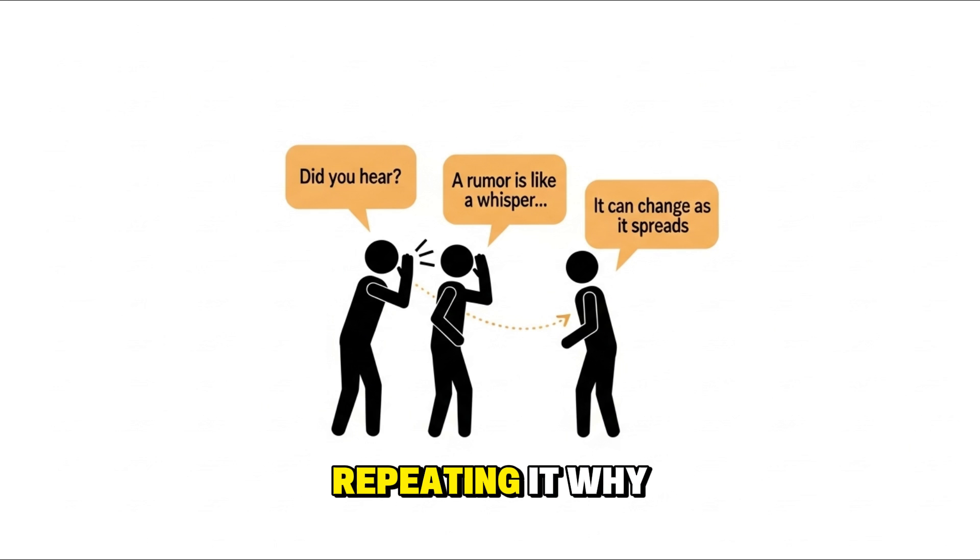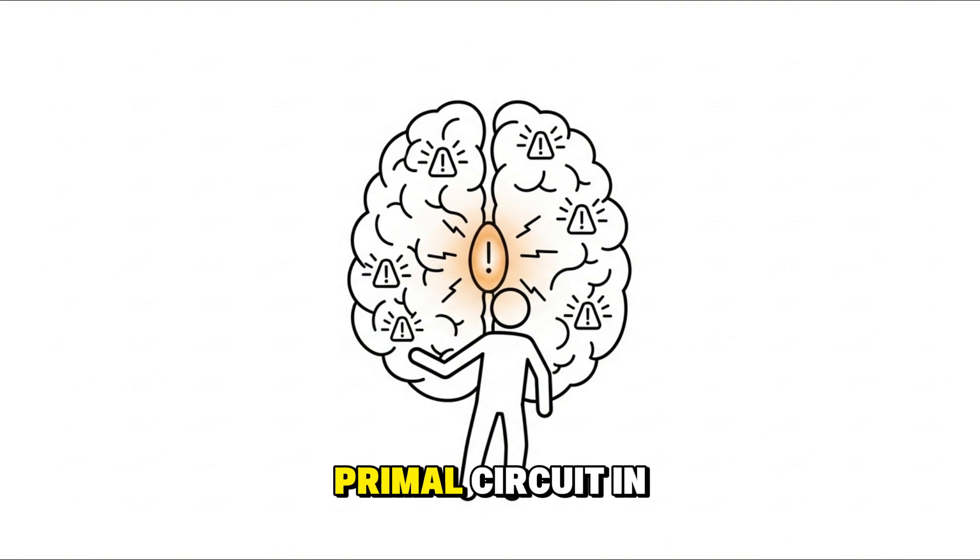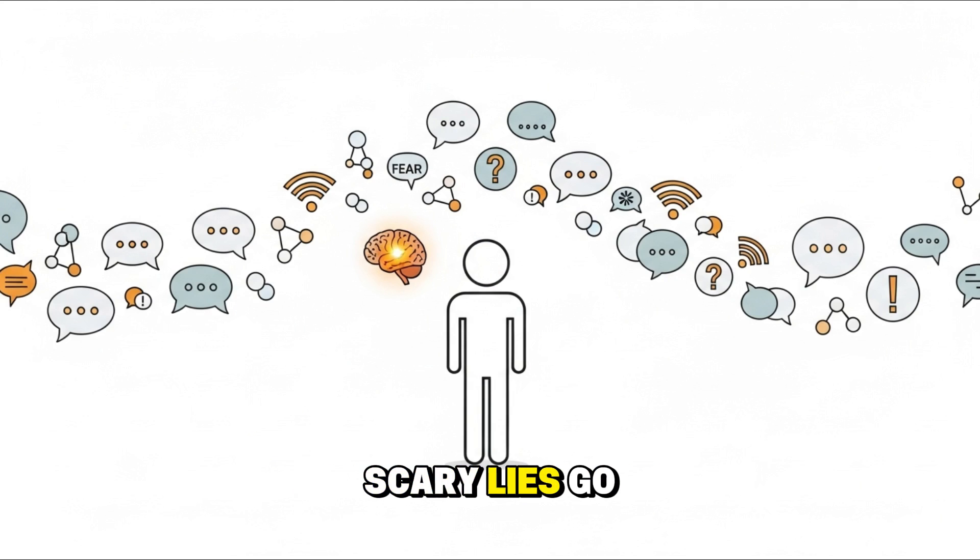Yet people keep repeating it. Why? Because fear bypasses logic. It activates a primal circuit in your brain called the amygdala, forcing you to remember threats more vividly than safety. That's why scary lies go viral. They hijack survival instincts. Our brains evolved to overreact, not overthink. And that's how misinformation wins. Not because it's smart, but because it's scary.